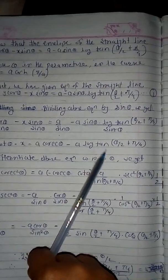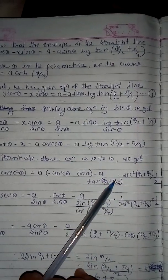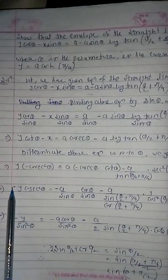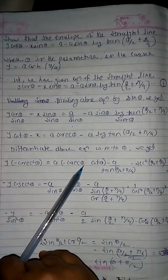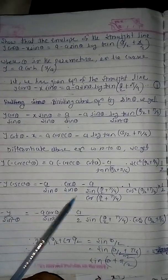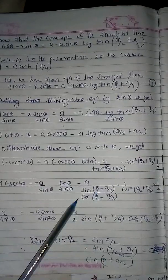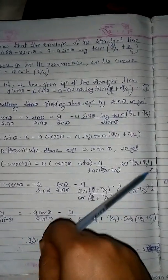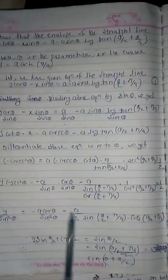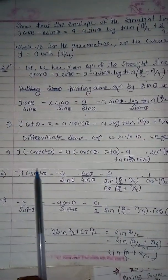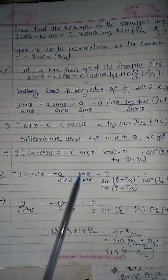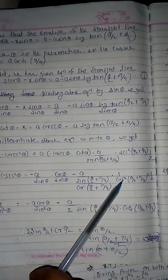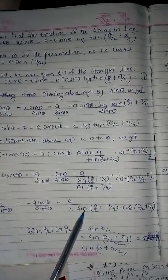Using derivative of log x = 1/x, the derivative of log(tan(θ/2 + π/4)) = sec²(θ/2 + π/4) / (2·tan(θ/2 + π/4)). So −y·cosec²θ = a·(cos θ/sin²θ) − a/(2·sin(θ/2 + π/4)·cos(θ/2 + π/4)), where cosec θ·cot θ = cos θ/sin²θ, and cos(θ/2 + π/4) cancels from sec².